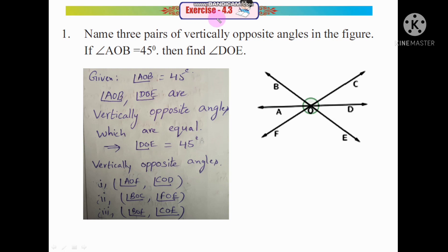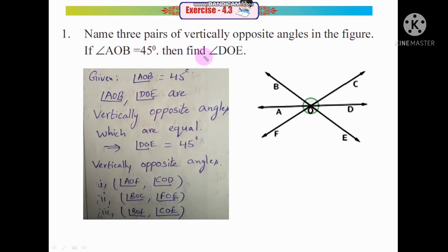Exercise 4.3, question 1: Name three pairs of vertically opposite angles in the figure. If angle AOB is equal to 45 degrees, then find angle DOE.